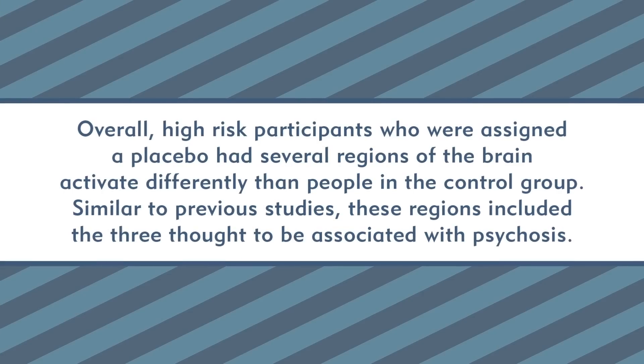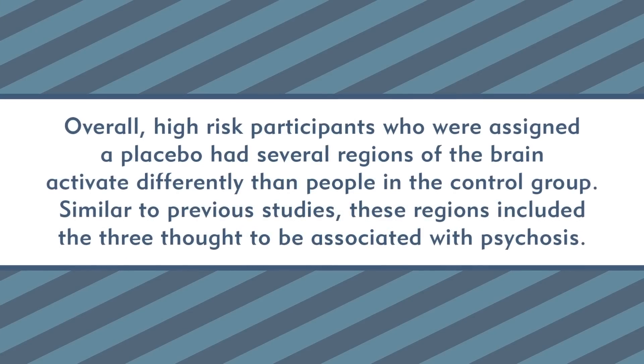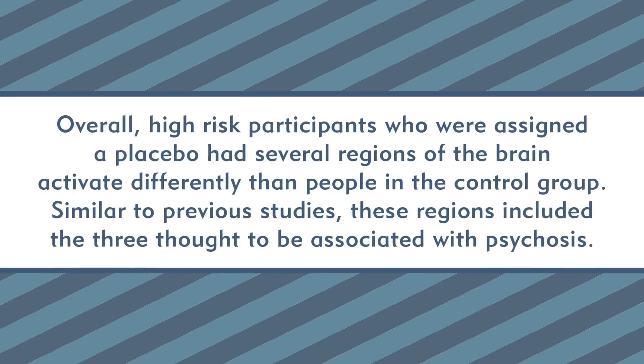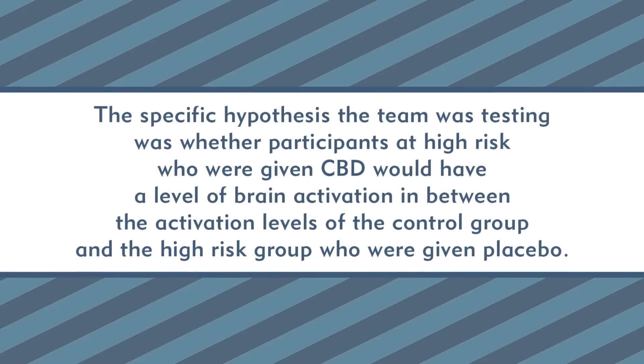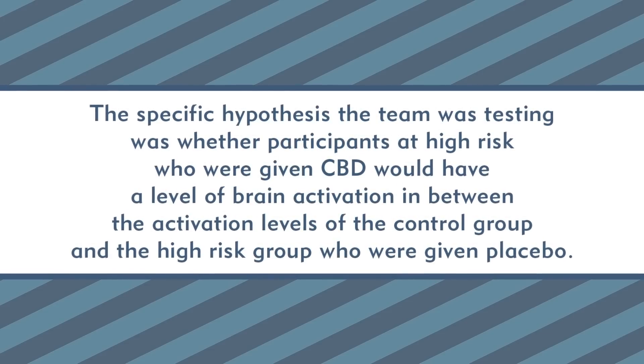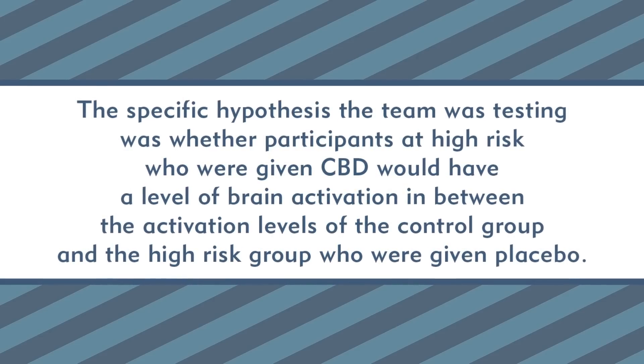Overall, high-risk participants who were assigned a placebo had several regions of the brain activate differently than people in the control group. Similar to previous studies, these regions included the three thought to be associated with psychosis. The specific hypothesis was whether participants at high risk given CBD would have a level of brain activation in between the activation levels of the control group and the high-risk placebo group. The team did find this middle-ground activation in the striatum during encoding, and in the parahippocampal cortex and midbrain during recall. These results suggest that for these specific brain regions, CBD may help normalize brain responses in individuals at clinical high risk of psychosis.